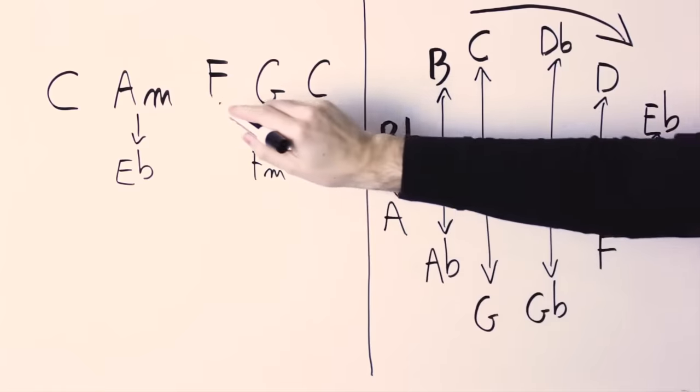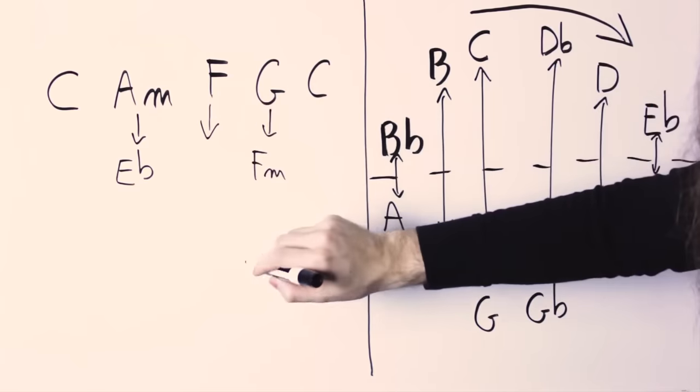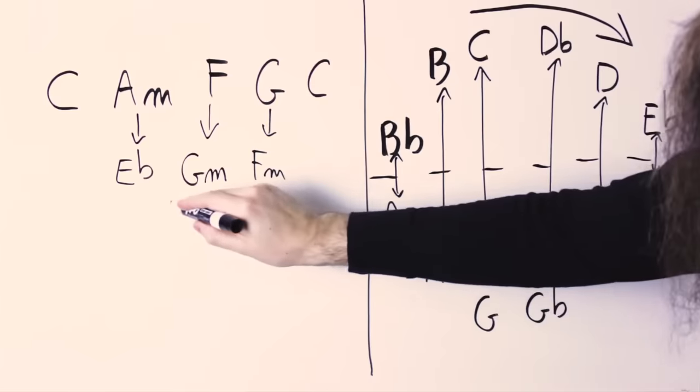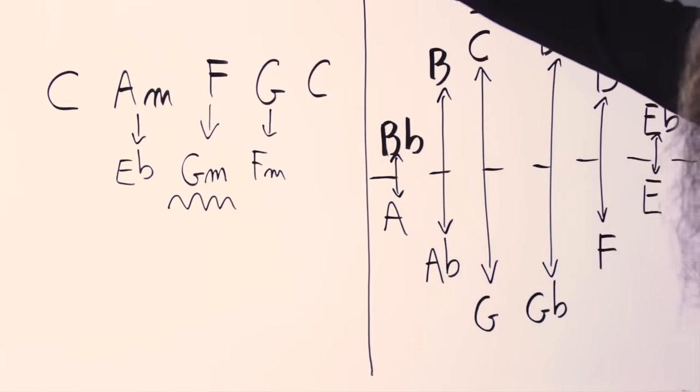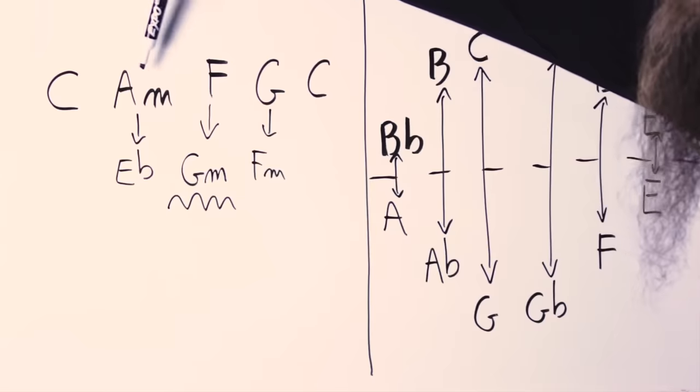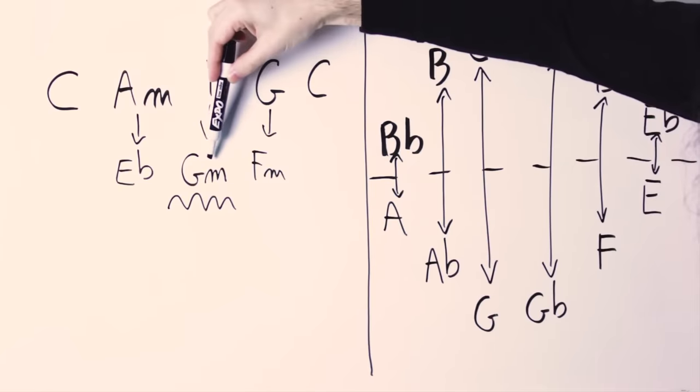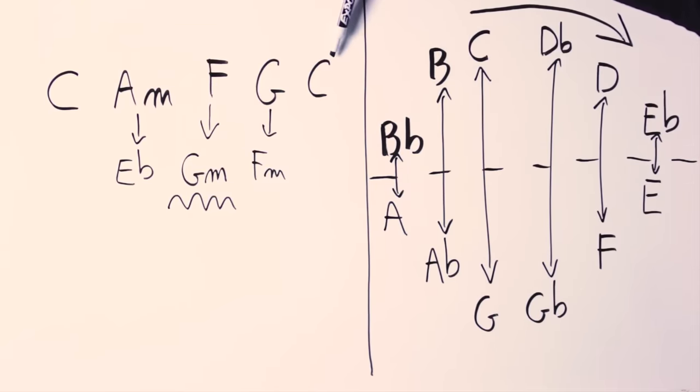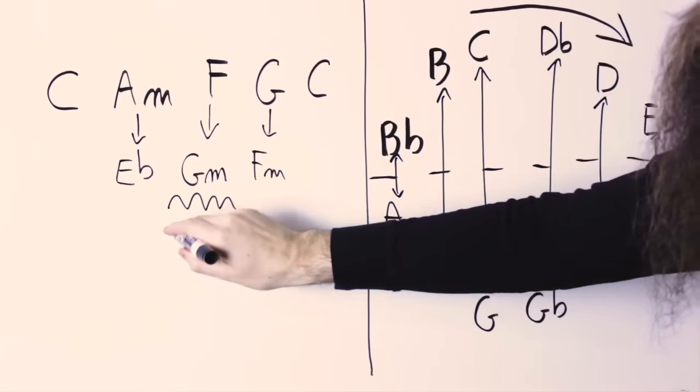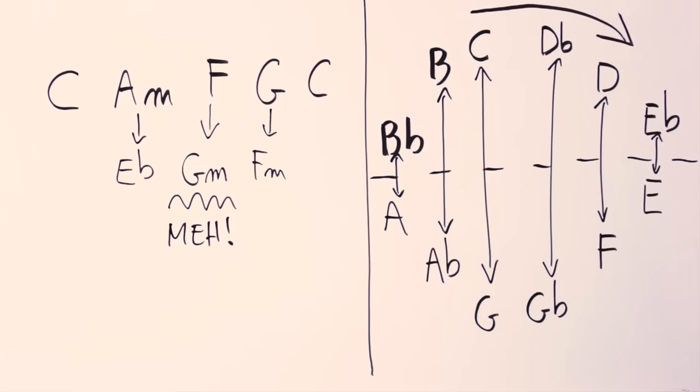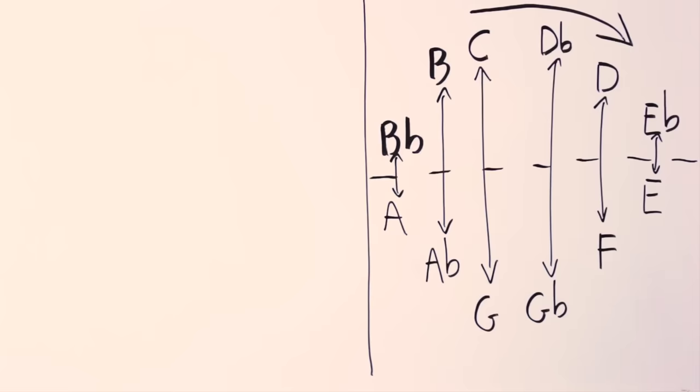Of course, I could also change the F into its negative harmony counterpart, G minor, but this is generally not done because it does not sound particularly good. I mean, hear that. I'm changing only the F into G minor, my chord progression is C, A minor, G minor, G major. It doesn't sound particularly good. And this is because negative harmony is not foolproof. It's not that every possible change will work. It's just that negative harmony gives you some options, and then you have to decide what sounds best.